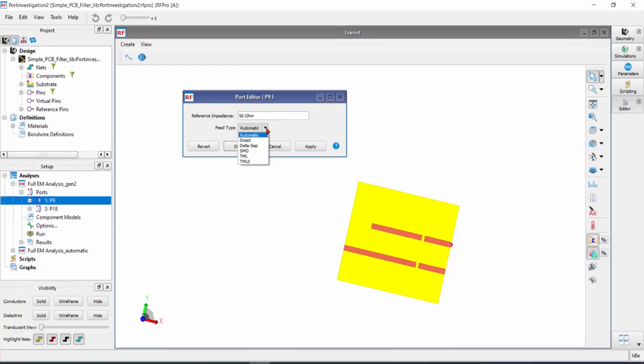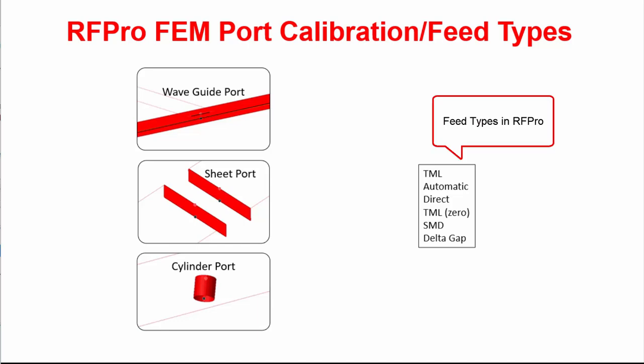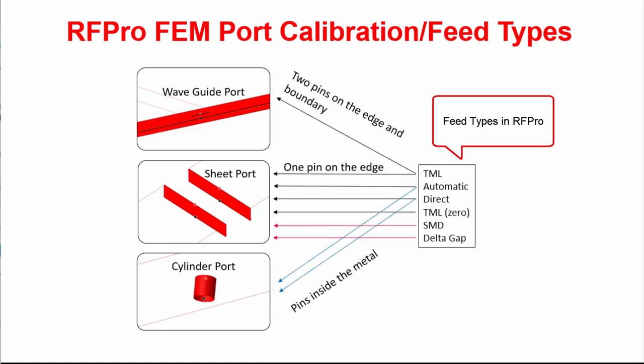However, the inner workings of FEM differ significantly from Momentum. We have three primary types of ports: waveguide port, edge-shaped port, and cylindrical port. This image shows you the relationship between these three types of ports and the types displayed in the setup.